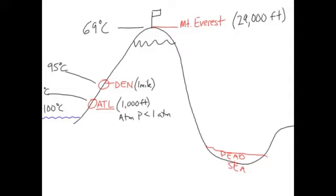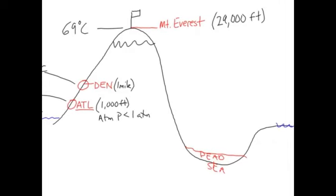69 degrees Celsius would make a hot bath, but it's nowhere near the normal boiling point of water. In the Dead Sea, which is roughly 400 meters below sea level, the boiling point is calculated to be around 102 degrees Celsius. So the boiling point of water changes with altitude: the higher you go, where atmospheric pressure is lower, the lower the boiling point. As you go below sea level, where atmospheric pressure is higher, the boiling point is slightly greater than at sea level.